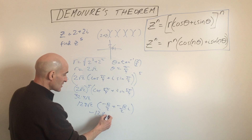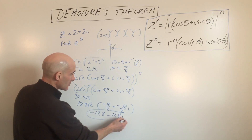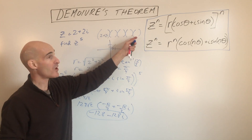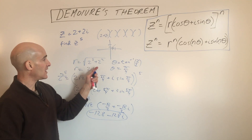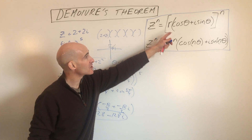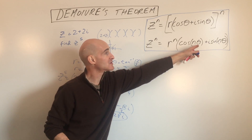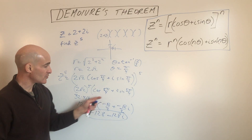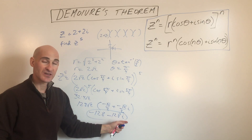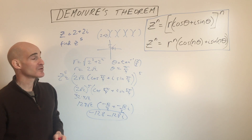The same calculation applies to the imaginary part, giving negative 128i. So the final answer is negative 128 minus 128i. This is much faster than foiling out the binomial five times. You translate to trigonometric form, apply De Moivre's Theorem by raising r to the power and multiplying the angle by that power, then distribute back to standard a plus bi form.